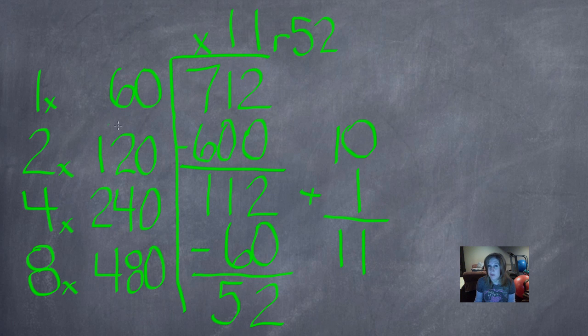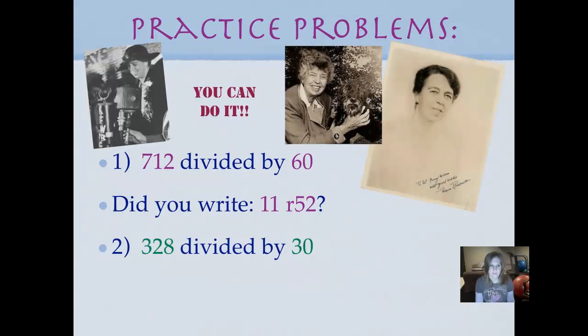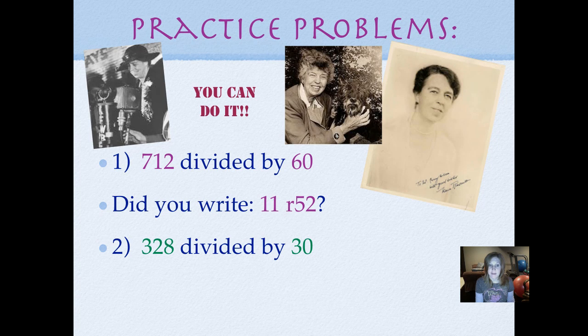Remember, our remainder in this problem could have been as high as 59. It has to be less than the divisor. But we're going to be seeing some pretty big remainders in these problems. So it's okay if your remainder is bigger than your quotient. Just not bigger than your divisor or even the same as your divisor. Go ahead and make sure you check it by multiplying your divisor 60 times 11. And then add 52, your remainder. 328 divided by 30. Use your crazy division and then check it. And then push play when you're ready.